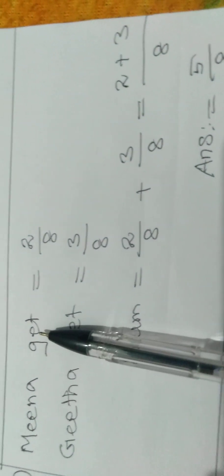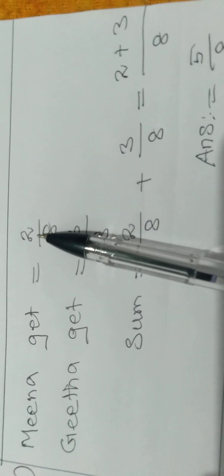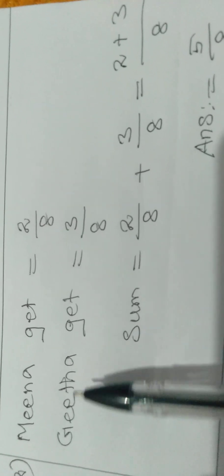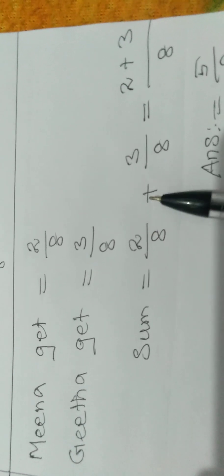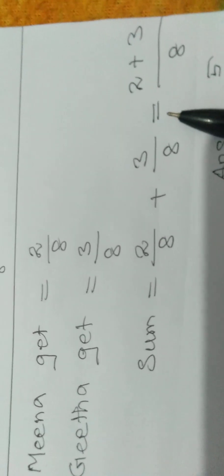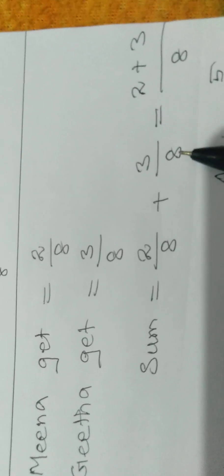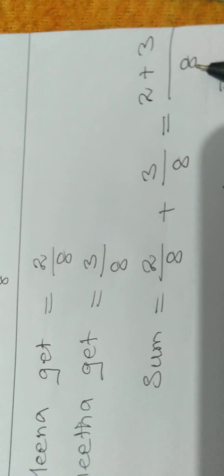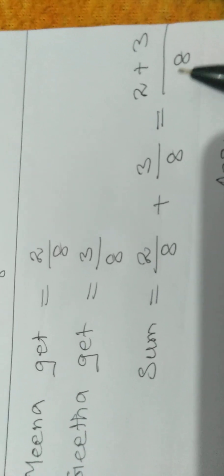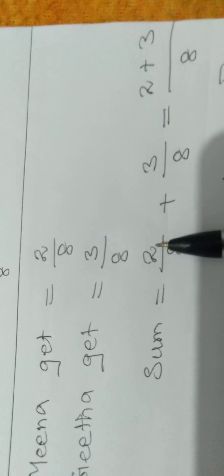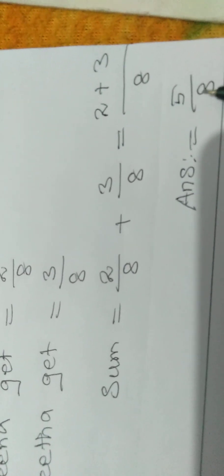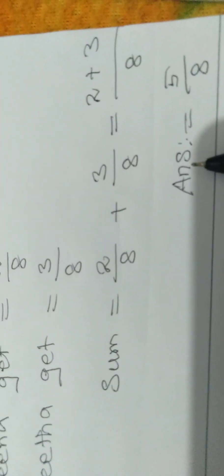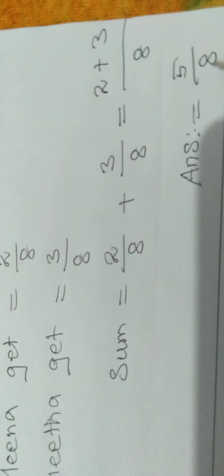Solution: Meena gets 2 by 8 of guava and Reena gets 3 by 8. The sum is equal to 2 by 8 plus 3 by 8. The denominators are the same, so we write the denominator as it is, then add only the numerators: 2 plus 3 is equal to 5. The answer is fraction 5 by 8.